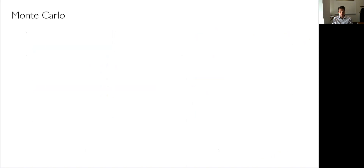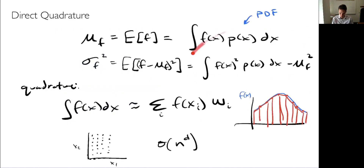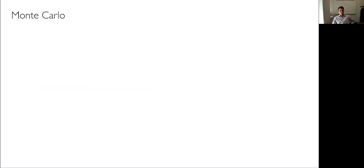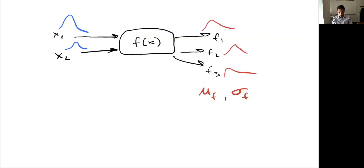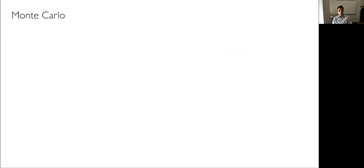The third approach is called Monte Carlo — it's really a class of many variations. Monte Carlo methods basically boil down to a few simple steps: we randomly sample the inputs from their input distributions, evaluate the function, and then compute statistics on the outputs. If we do that enough times, randomly choosing values according to the input distributions and running the function, we can collect statistics based on those outputs — mean, variance, or even the full distribution. The law of large numbers says that with enough samples we converge to the true values.